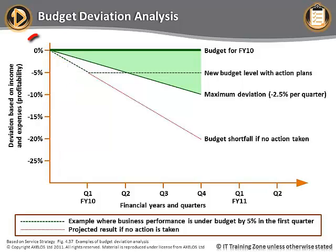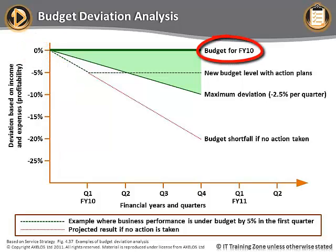A deviation of zero means that actual profitability is exactly what was forecast. The horizontal line, labeled Budget for FY10, represents a budget deviation of 0%.